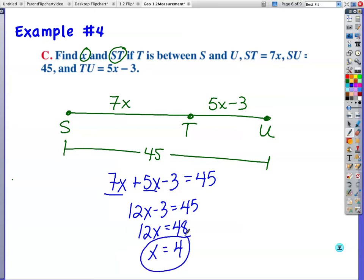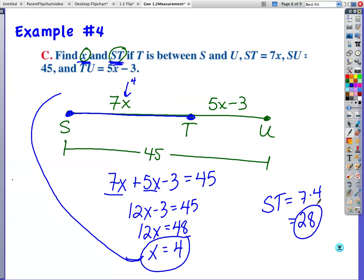Now, this would be where I'd make my mistake. I would move on to the next problem. However, it says find X and find the distance from S to T. So, I have to find this piece right here. If I know that X is 4, then I'm going to put a 4 in for X. 7 times 4 is 28. So, the distance from S to T is 7 times 4, or 28. And, I do not have a unit on this. There is no inches or centimeters to work with. So, X is 4, and the distance is 28.